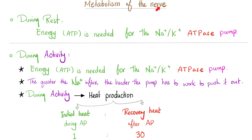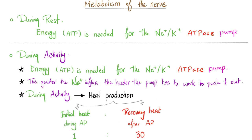How does the nerve get energy? It needs ATP for the sodium-potassium ATPase, both during rest and during activity. The greater the sodium influx, the harder the pump must work afterward, consuming more ATP. This produces heat: initial heat during the action potential, and recovery heat after — and you produce more recovery heat than initial heat, because cleaning up the mess after the party costs more than the party itself.